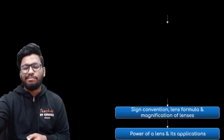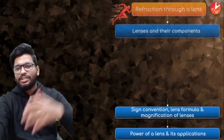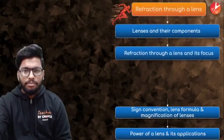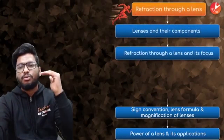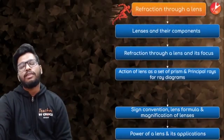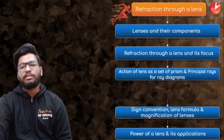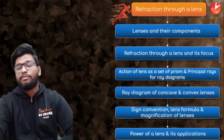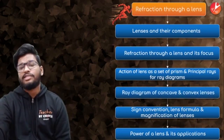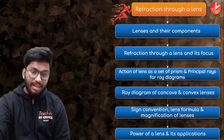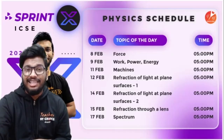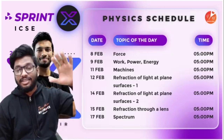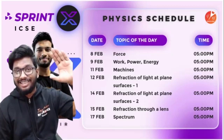The topics we'll be covering today are: lenses and their components, refraction through a lens and its focus, action of a lens as a set of prisms, principal rays and ray diagrams, ray diagrams of concave and convex lenses, sign convention, lens formula, magnification of a lens, and power of a lens and its applications.